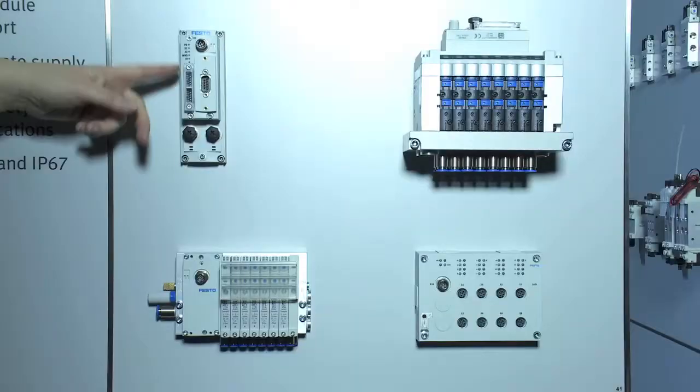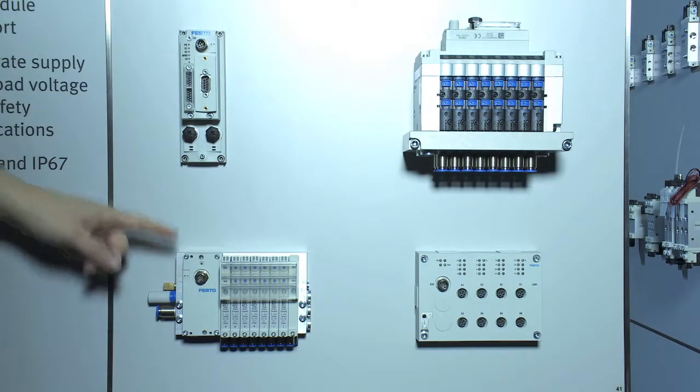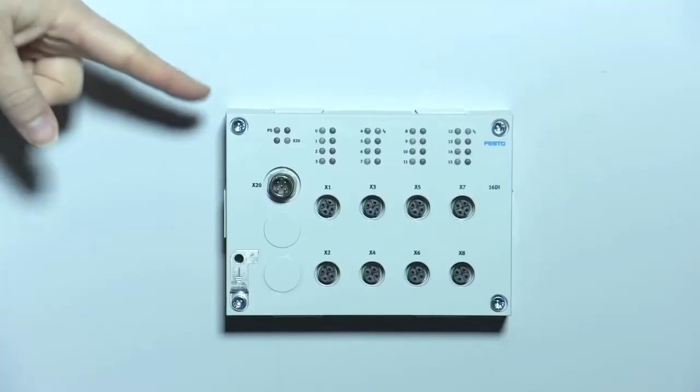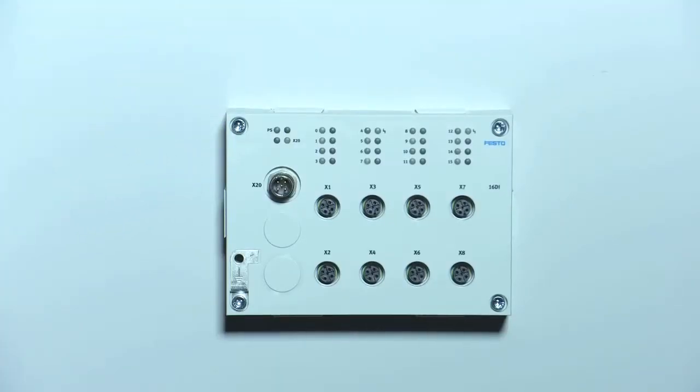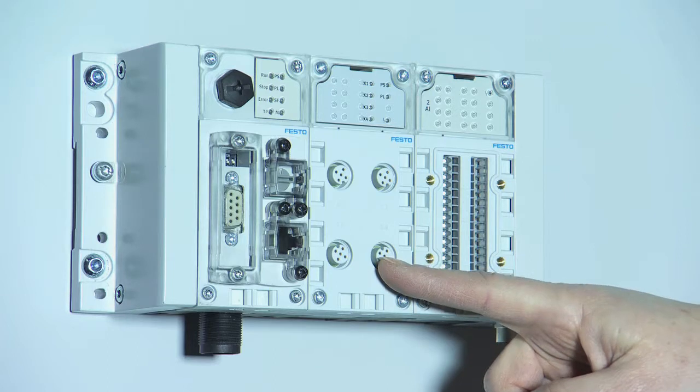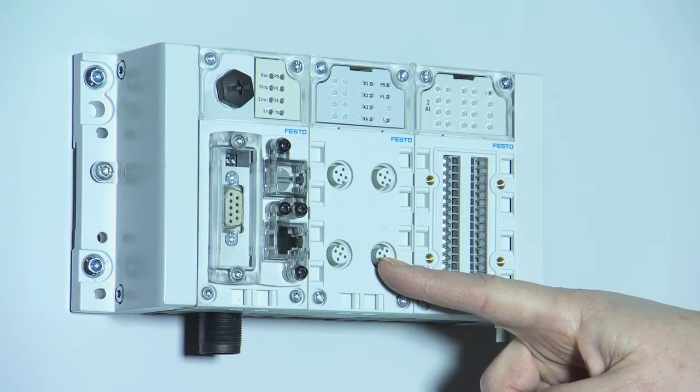And using the M12 connector, you can also reduce cost by using a splitter module like this one. How about one connection to a valve terminal and the other to an input module for your cylinder switches? And with four connections directly onto our market-leading CPX automation platform, you can distribute valves and I.O. as required.